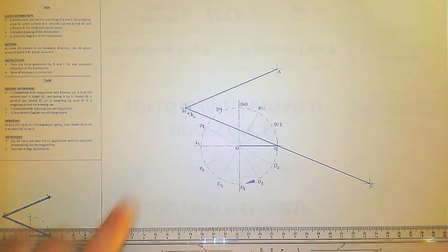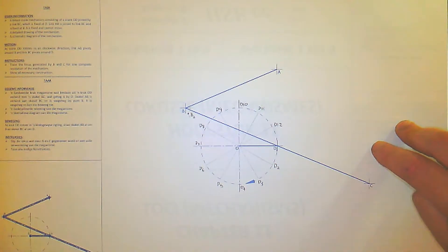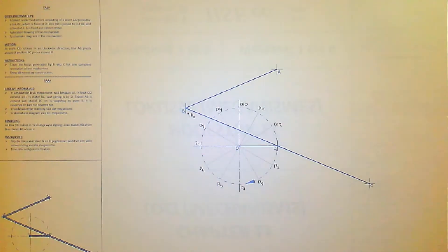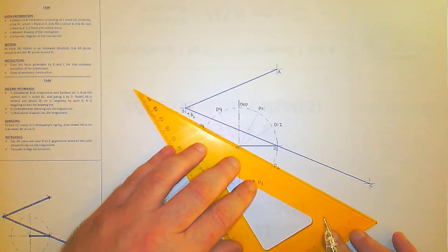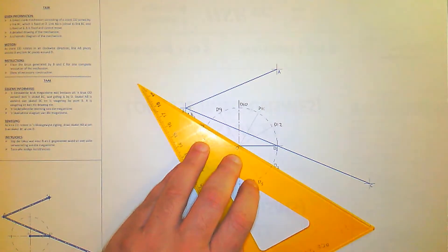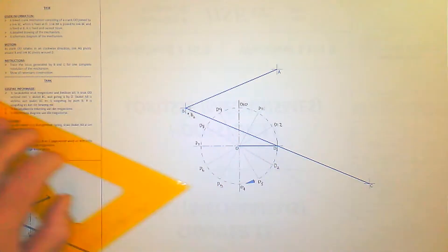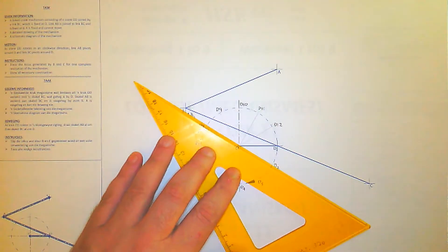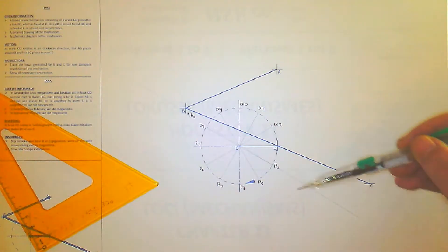B2 has to be linked with D2, so take your ruler and link D2 to B2 — that gives you the new link BC. Draw the line as a construction line for now. You can see the construction line running through D2 all the way to B2.